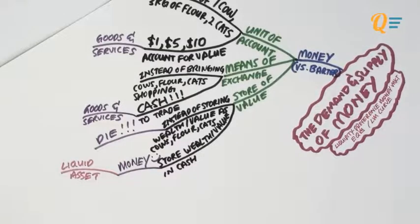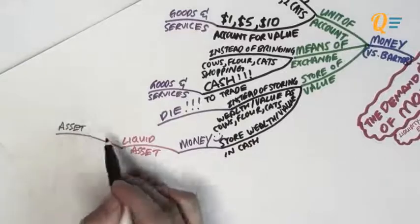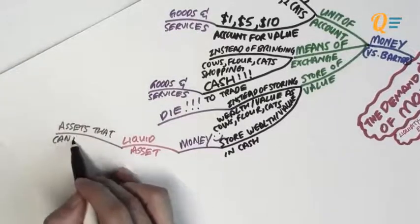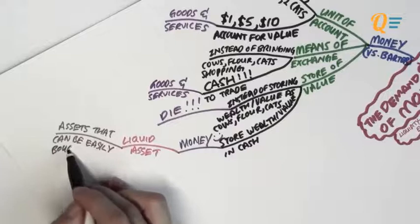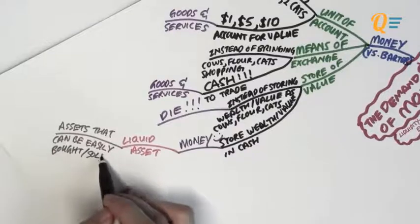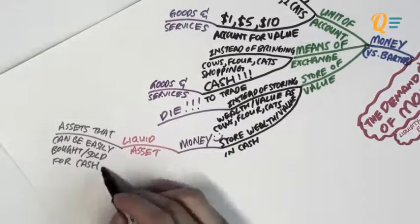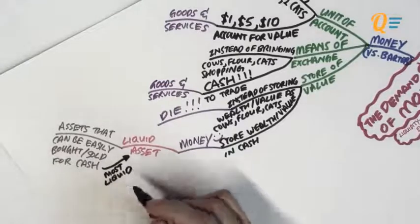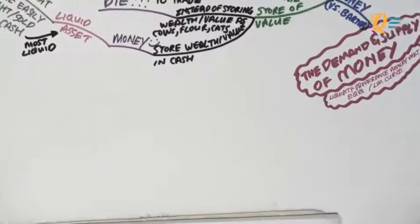Money is known to be a liquid asset. A liquid asset is basically an asset that can be easily bought and sold for cash. Since cash is already cash, that makes money your most liquid form of asset anybody can hold.